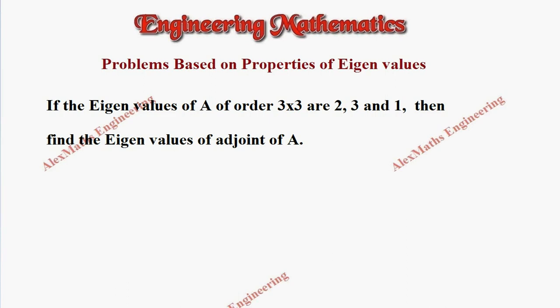There is a matrix of order 3 by 3 and it is given the eigenvalues of this matrix A are 2, 3 and 1. Now we have to find the eigenvalues of adjoint of A.